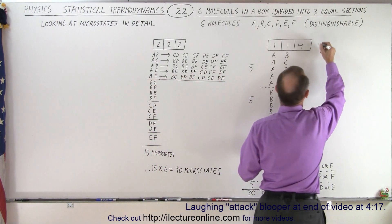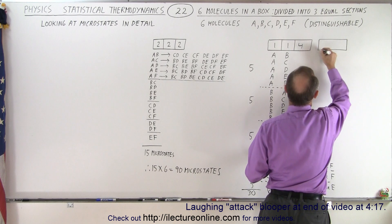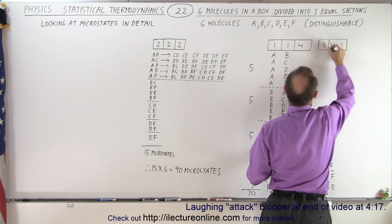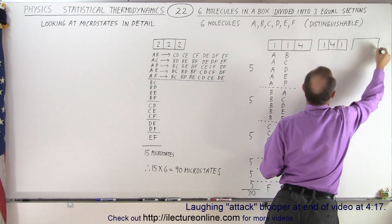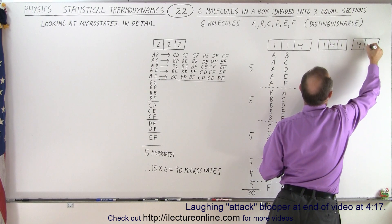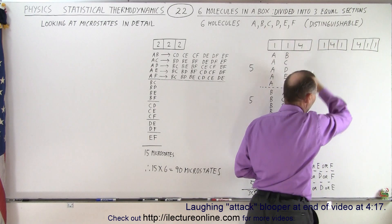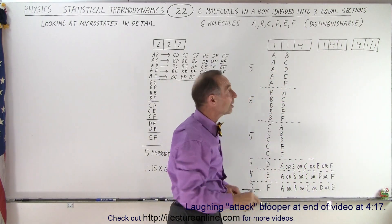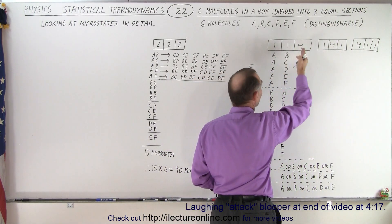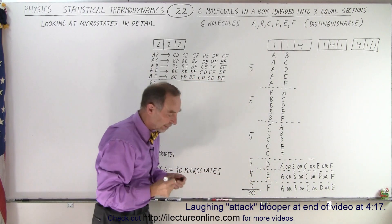And then of course we had the situation where we had one, four, one. And then we had the situation where we had four, one, and one. So you can see that thirty microstates plus thirty microstates plus thirty microstates is a total of ninety microstates for a situation where I have one, one, and four molecules in those arrangements.